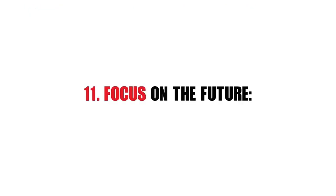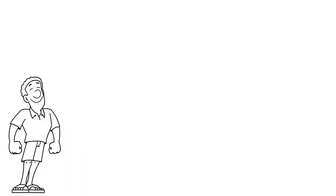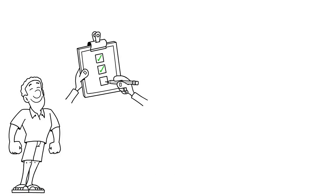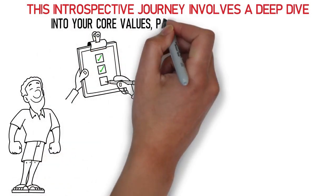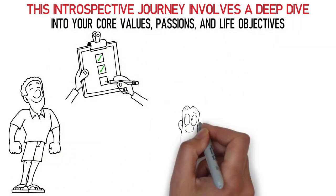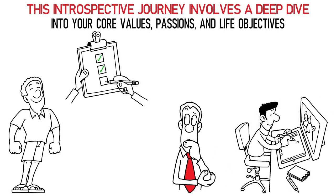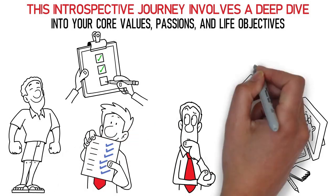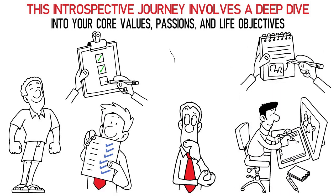11. Focus on the future. To embark on a path of personal growth and empowerment, start by meticulously identifying your own markers of success and fulfillment. This introspective journey involves a deep dive into your core values, passions, and life objectives. By understanding what truly resonates with you, you can paint a clearer picture of your aspirations. Next, translate these ambitions into practical, achievable steps. Breaking them down into manageable tasks not only makes your goals more approachable, but also cultivates resilience and adaptability along the way.